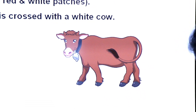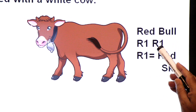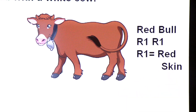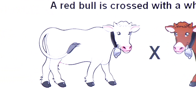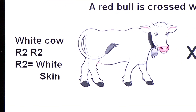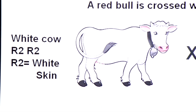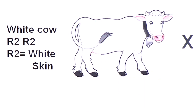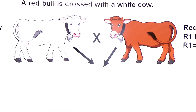It means both the parents will equally show their character in the offspring. A red bull is crossed with a white cow. Red bull का genotype है capital R1 capital R1 — capital R1 is a dominant allele for red skin. White cow का genotype है capital R2 capital R2 — capital R2 is also a dominant allele for white skin। दोनों parents के पास dominant allele है।